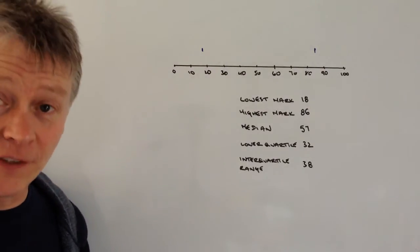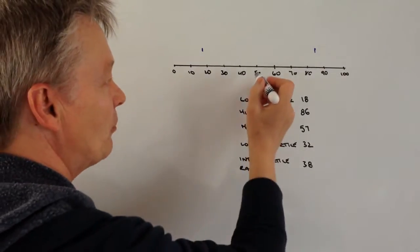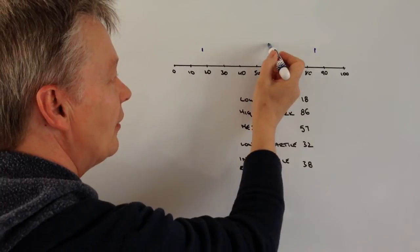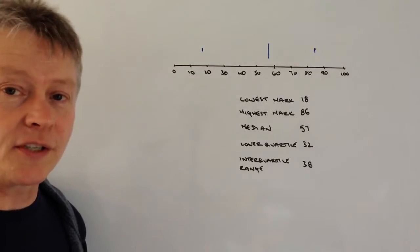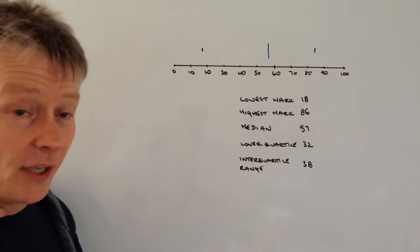The median is 57. So again, I'm going to put a mark at 57, which is about there. I'm going to make that slightly bigger, and when I join all the lines up together, you'll see why I've done that.